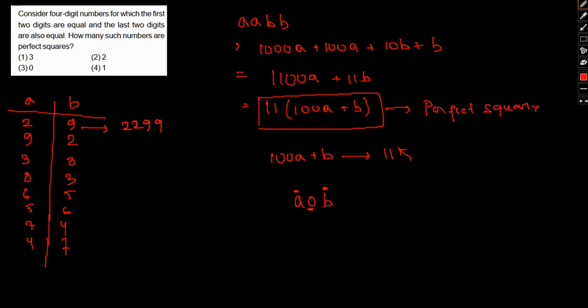The given set of choices will be: 2992, 9229, 3883, 8338, 6655, 5566, 7744, and 4477. If we check all these numbers, only 7744 is a perfect square.